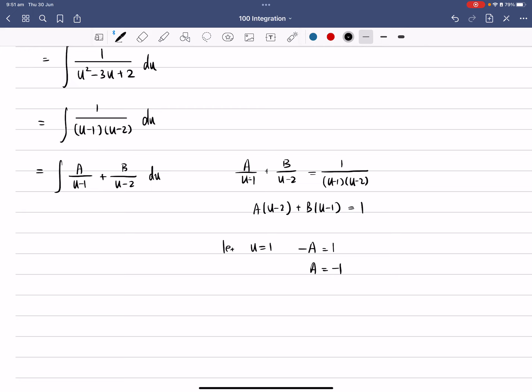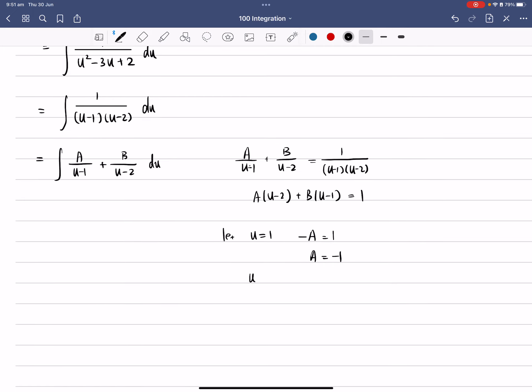Alright, that's what A equals to. Now we can substitute u equals to 2. So that should give us B equals to 1. So it's a very simple substitution to find out the value of A and B.